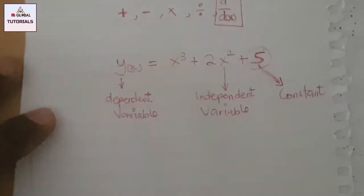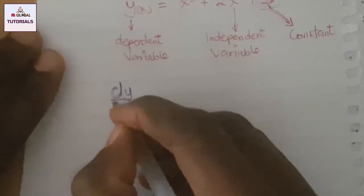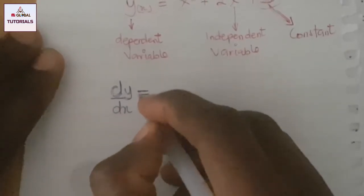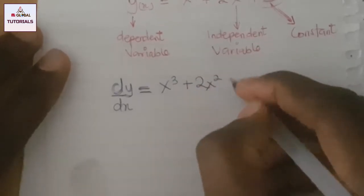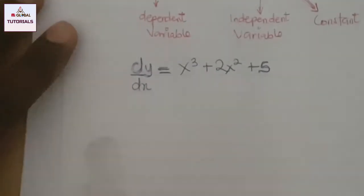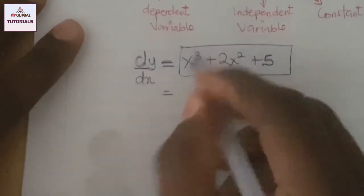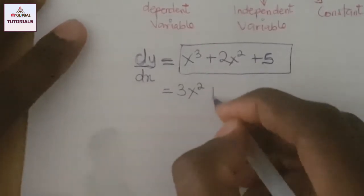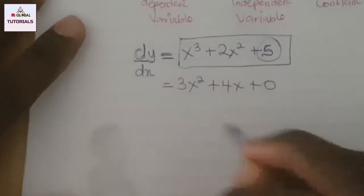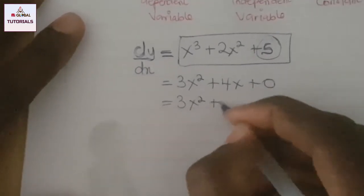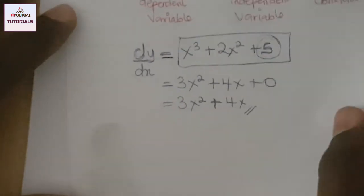So when we differentiate this function, it will be dy/dx of x³ + 2x² + 5. Using the power rule, differentiating x³ gives us 3x², and differentiating 2x² gives us 4x. When we differentiate a constant it gives us zero, so the whole equation gives us 3x² + 4x.